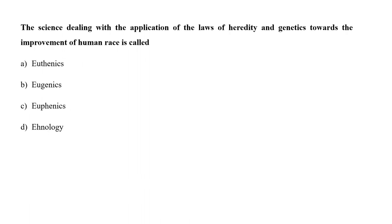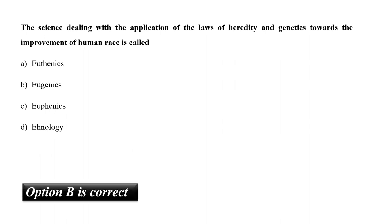The science dealing with the application of the laws of heredity and genetics towards the improvement of human race is called A. Euthenics, B. Eugenics, C. Euthenics, or D. Enology? Eugenics is a science that deals with the laws of heredity and genetics towards the improvement of human race. It promotes inbreeding between individuals with favorable genes. So the correct answer is option B.